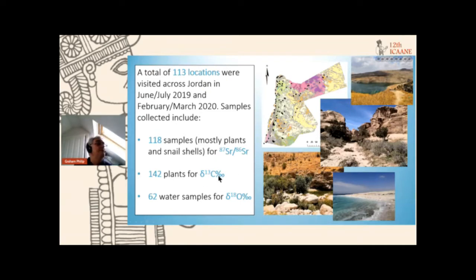One of the big difficulties is the limited information available on local baseline variability — the variability in bioavailable isotope values. The key aim of this project was to create a multi-isotopic base map for Jordan, sometimes referred to as an isoscape map. We had a program of field data collection through 2019-2020, one summer season and one winter season. We sampled 113 locations, taking 118 samples for strontium (mostly plants and some snail shell), 142 plant samples for delta carbon-13, and 62 water samples for oxygen isotopes.